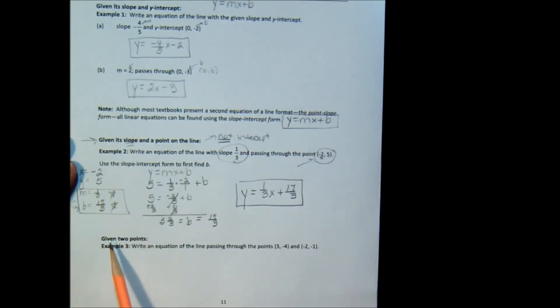This time, we're going to write the equation of a line if you are given two points on that line. So example 3 says, write an equation of the line passing through the points 3, negative 4, and negative 2, negative 1.